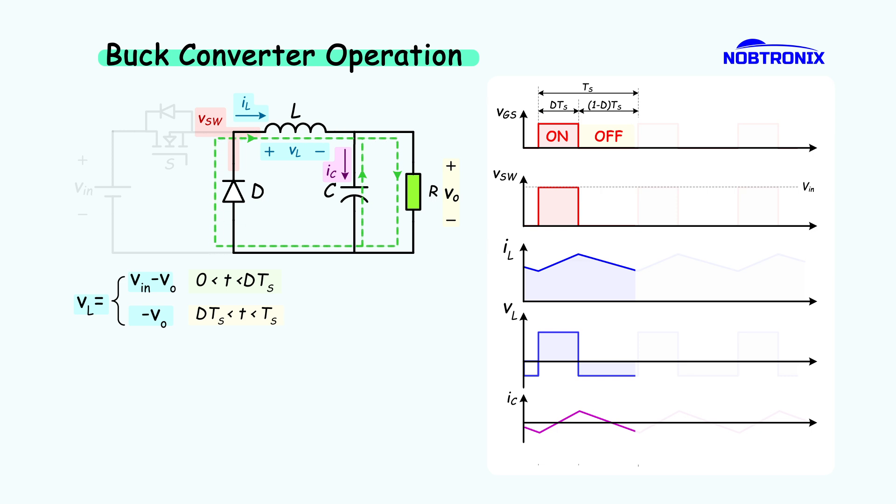To figure out how the input and output voltage relates, we use something called the volt-second balance. In simple terms, the area under the inductor's voltage curve over one cycle has to be zero. We write: (VIN minus VO) times DTS minus VO times (1 minus D) times TS. That all adds up to zero. When we simplify that, we get a formula that shows how the output voltage depends on the duty cycle.